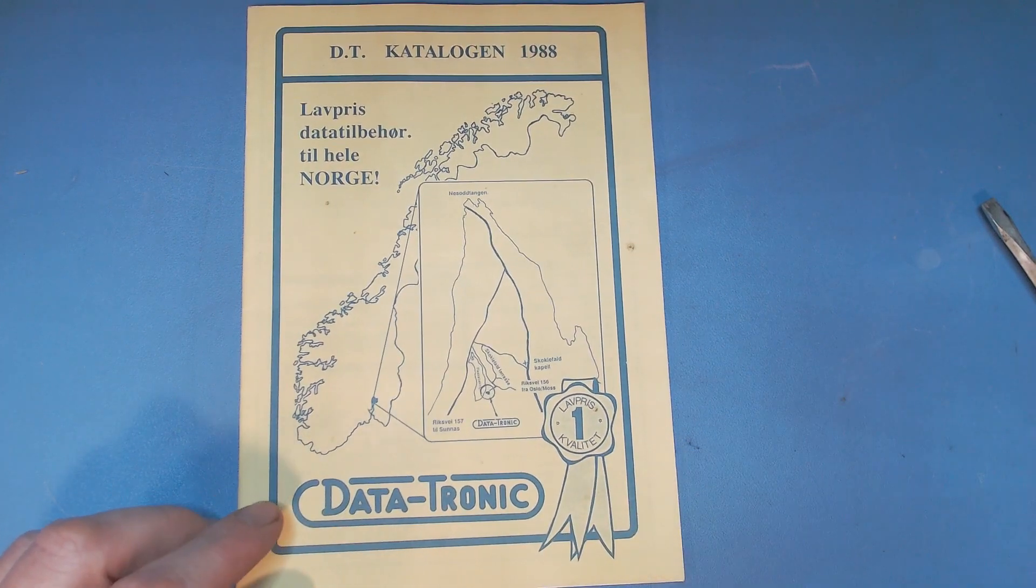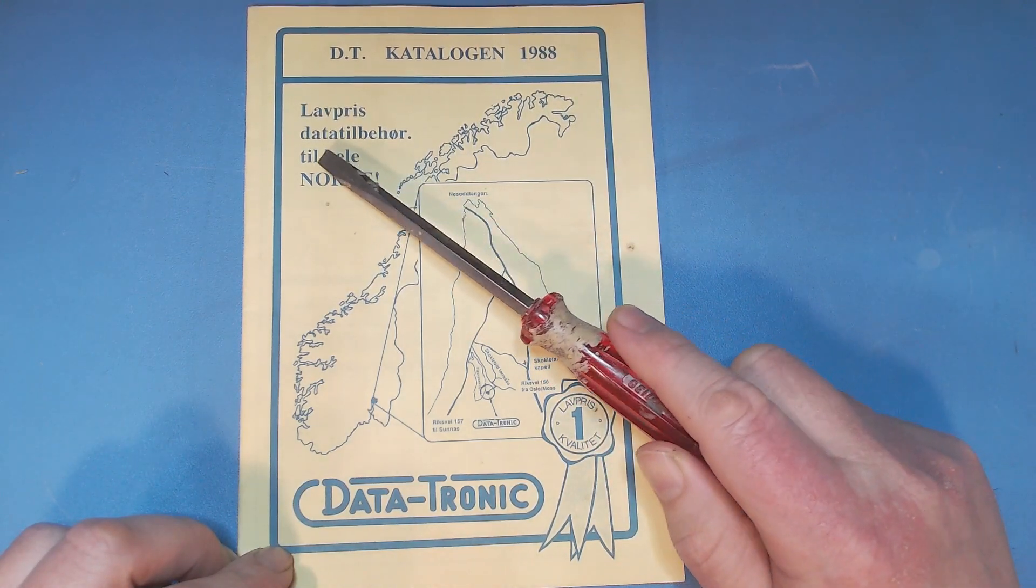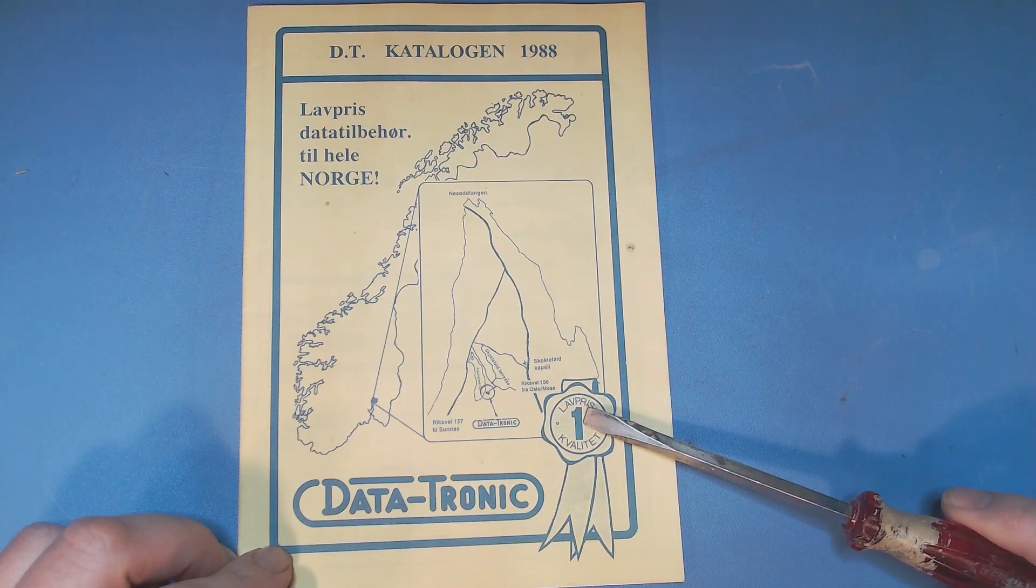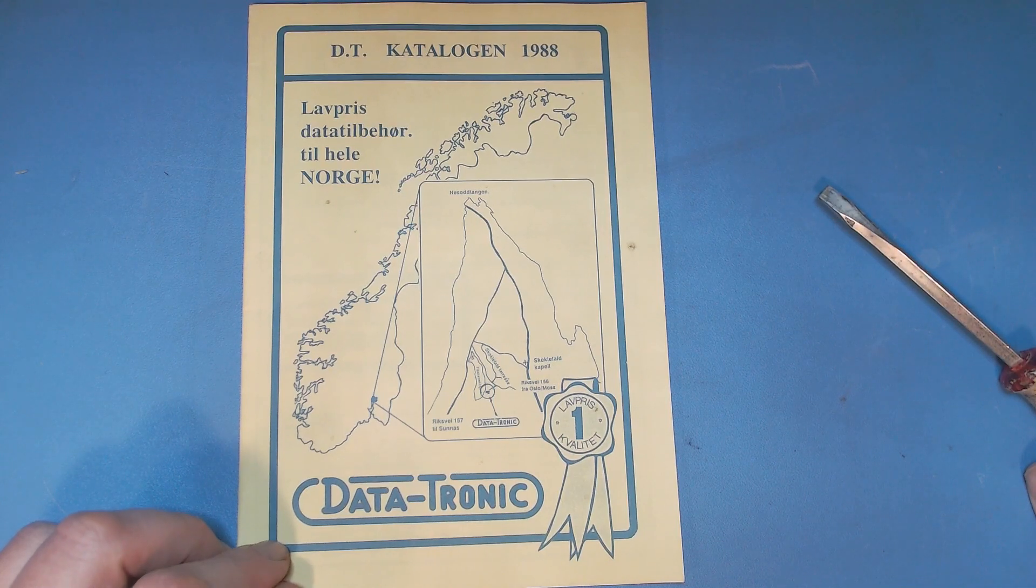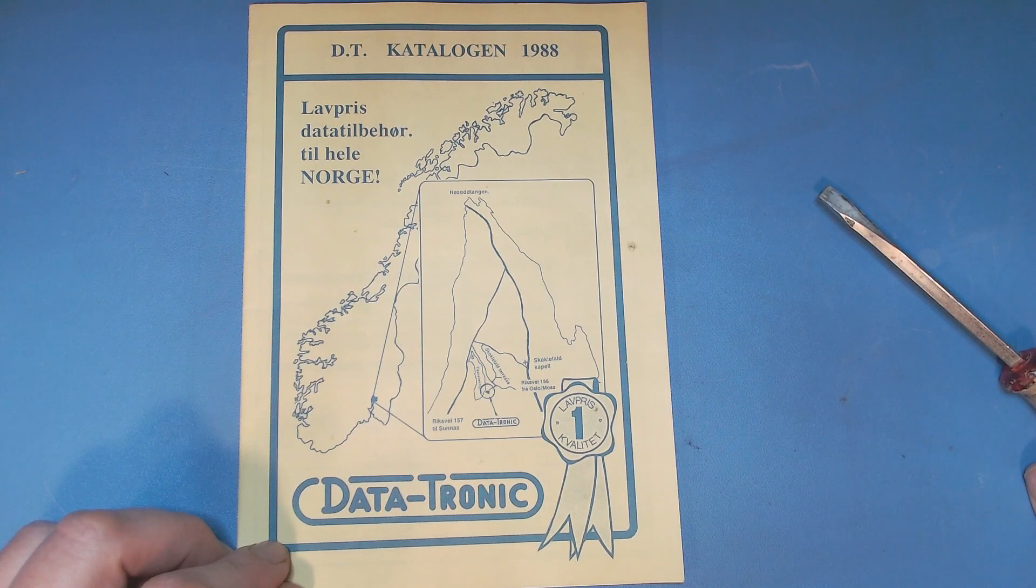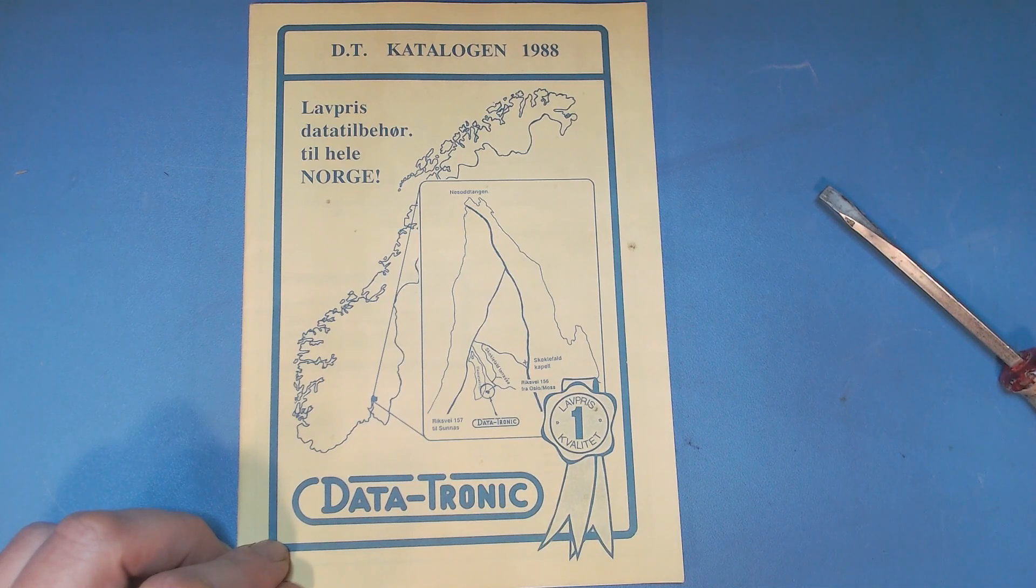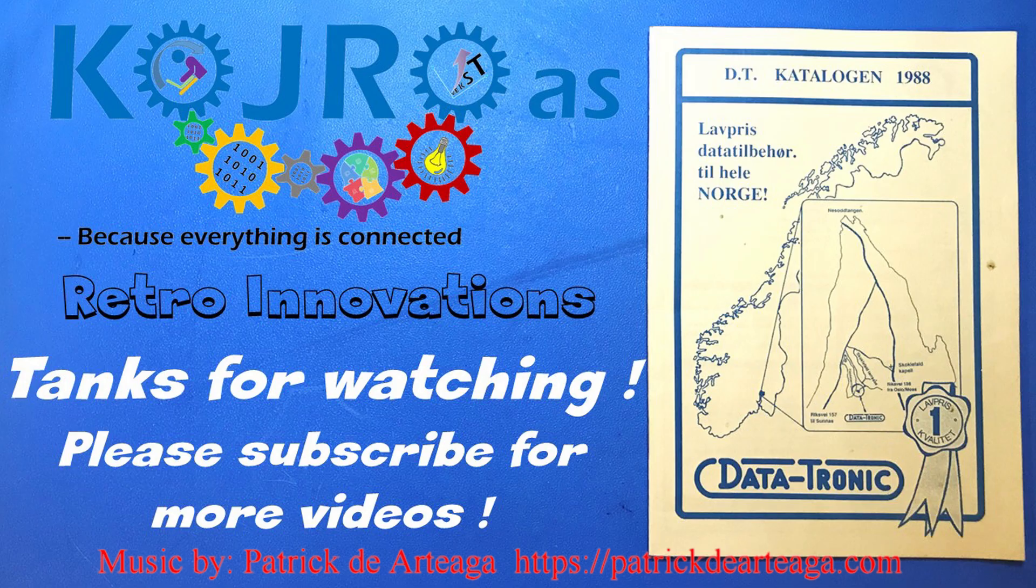So that about rounds up the Data-Tronic catalog of 1988, low price computer equipment for the whole of Norway. They actually gave themselves this award for being number one on low price and quality - not low quality, but low price and high quality. Thank you for watching. I hope you enjoyed this trip into memory lane, and I will come back to you with more videos soon.